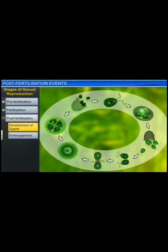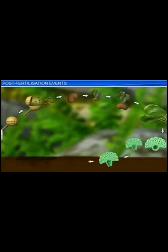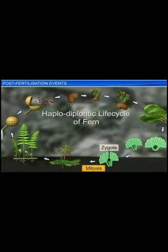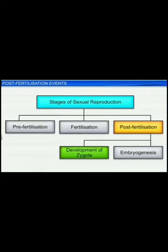Apart from the environment, the development of the zygote is also influenced by the life cycle of an organism. If the organism has a haplontic life cycle, as is the case with Chlamydomonas, you will notice that the zygote divides meiotically and forms haploid spores. However, in the case of a fern, a pteridophyte with a haplodiplontic life cycle, the zygote divides mitotically to form a sporophyte.